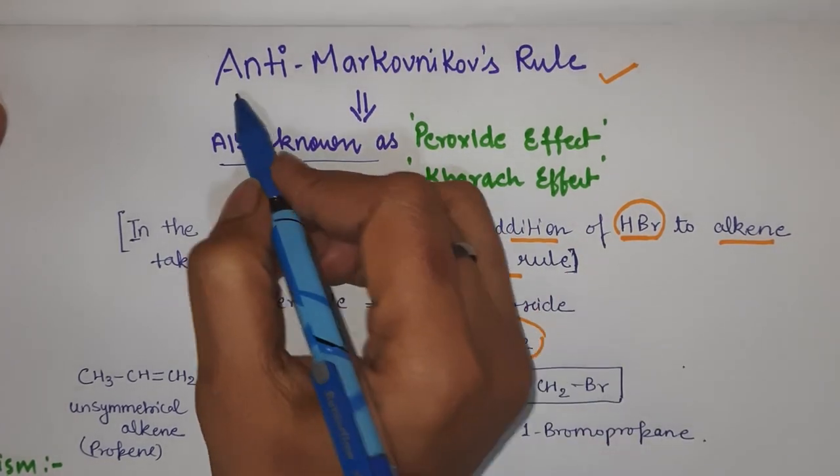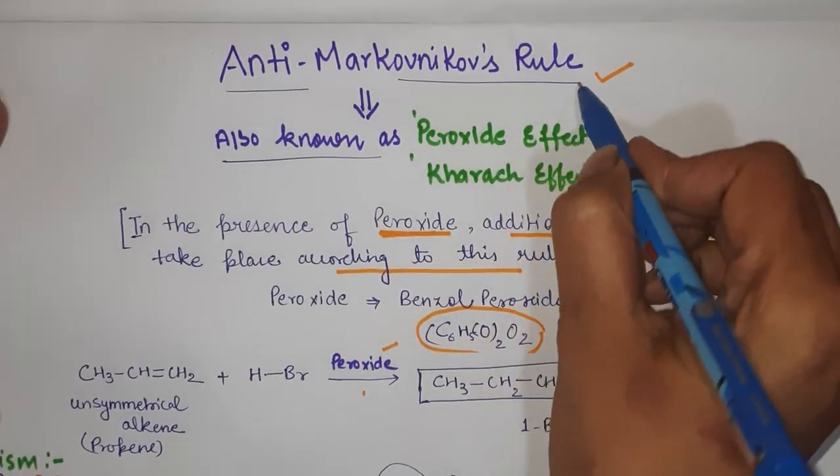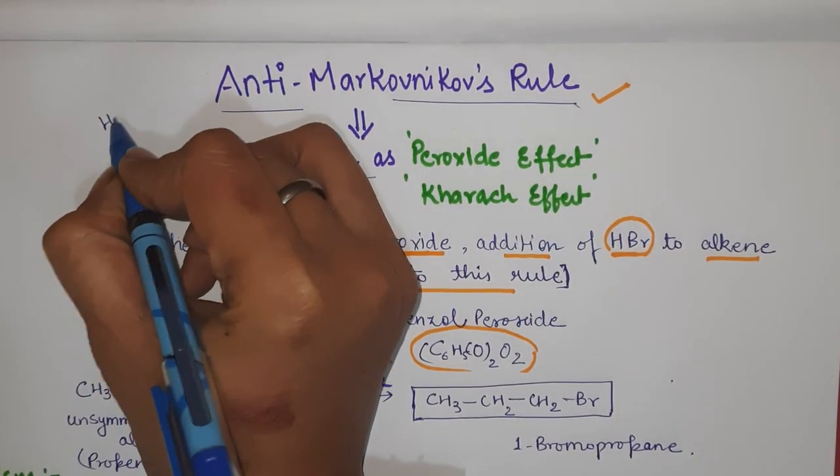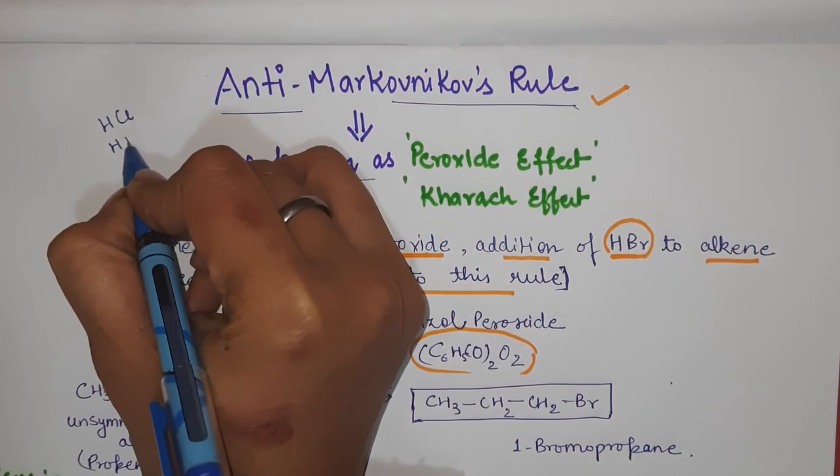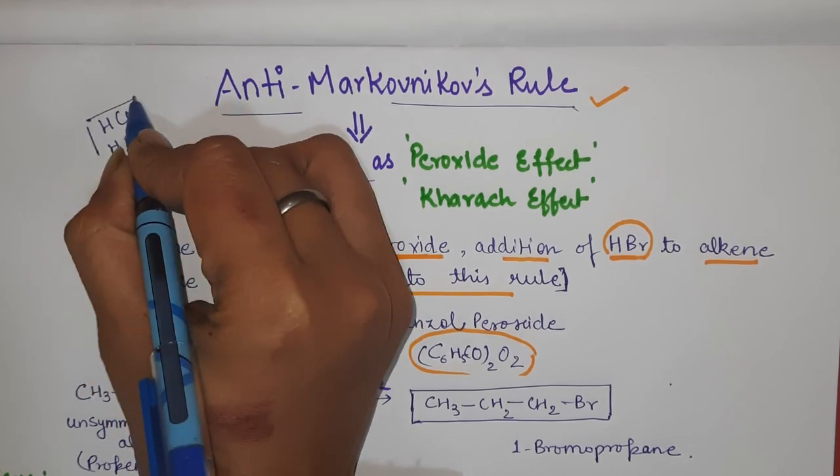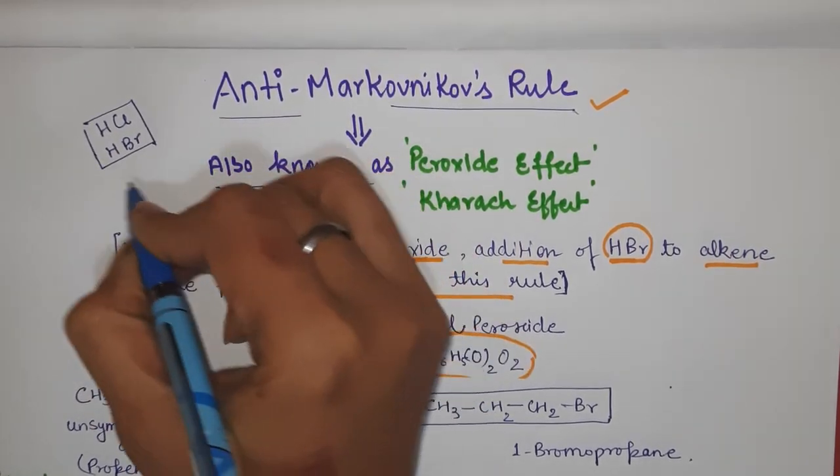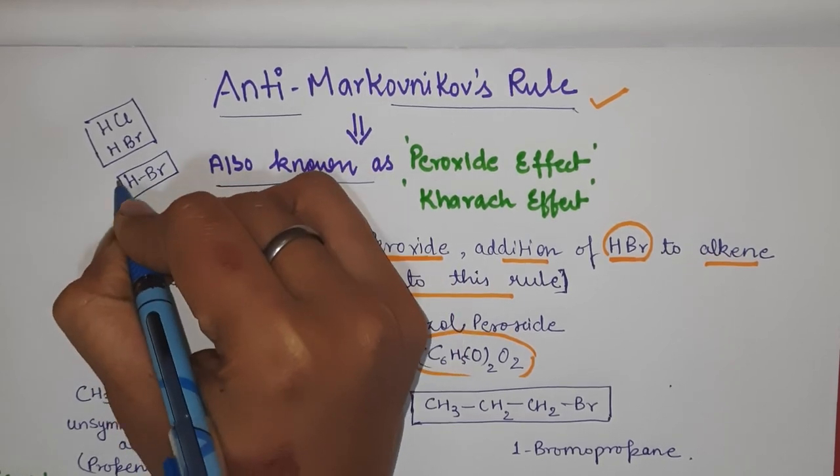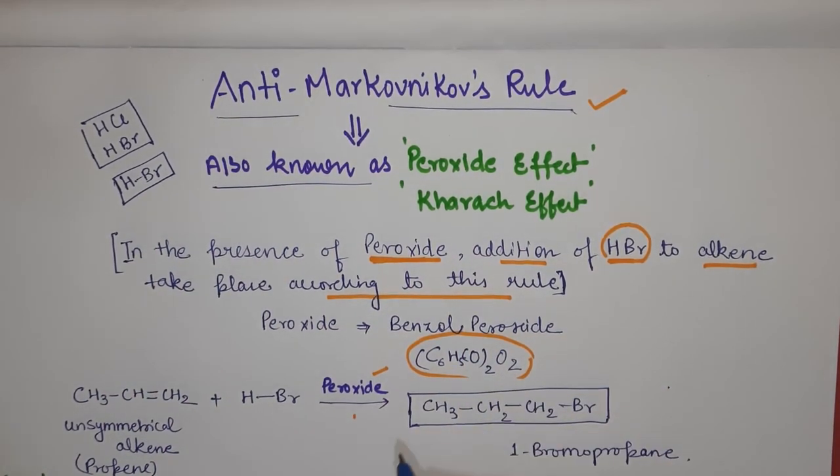Also remember, in the case of Markovnikov we can take HCl as well as HBr, but in the case of Anti-Markovnikov Rule we can only take HBr as a reacting species. And here the peroxide which we are taking is the benzoyl peroxide.